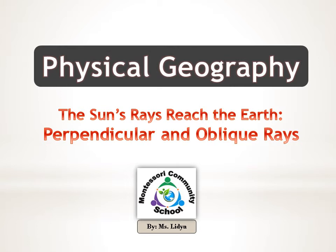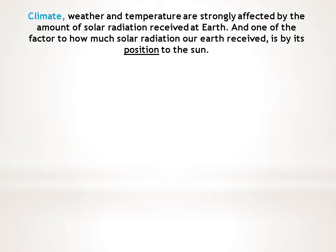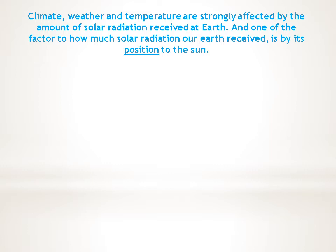Good morning children, back with Miss Lydia again. Today we are going to learn about how the sun's rays reach the earth. Our topic is perpendicular and oblique rays. Climate, weather, and temperature are strongly affected by the amount of solar radiation received at earth, and one factor in how much solar radiation our earth receives is its position relative to the Sun.